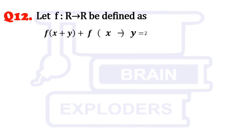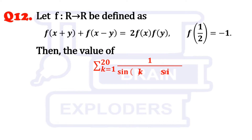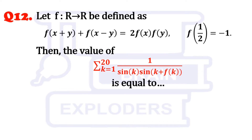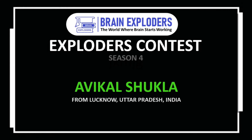Let f be a function defined from real numbers to real numbers as f(x+y) + f(x-y) = 2f(x)f(y), where f(1/2) = -1. Find the value of the summation k from 1 to 20 of 1 / (sin k · sin(k + f(k))). You are watching Brain Exploders.